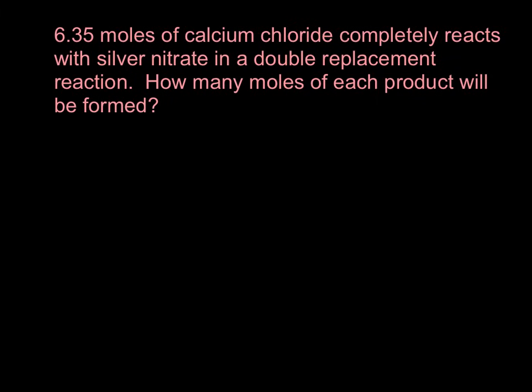Here's a more detailed problem — you have to predict the products on this one. You start with 6.35 moles of calcium chloride reacting with silver nitrate in a double replacement reaction. You need to write a balanced chemical equation and then figure out using a BCA table how many moles of each product will be formed. If you want to try it on your own, pause the video right now.